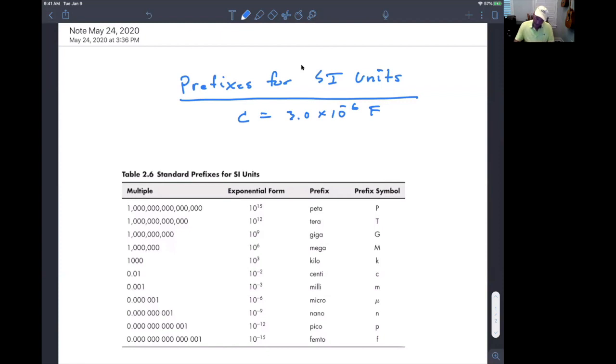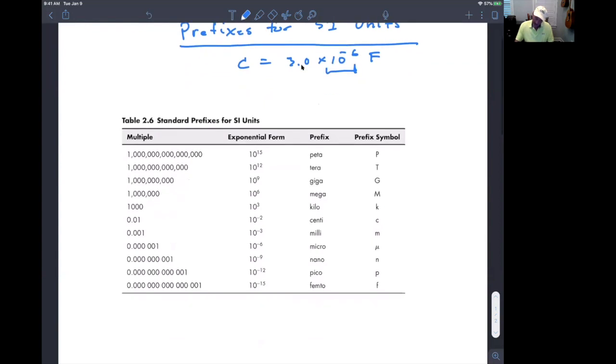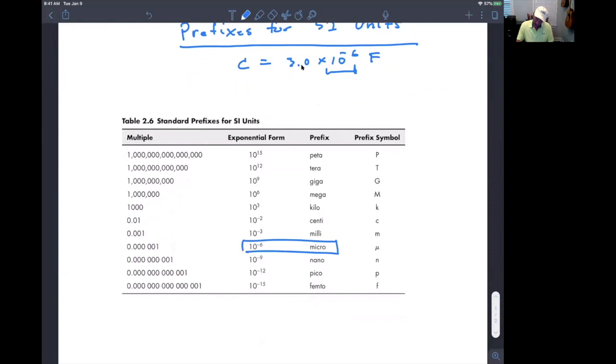But if I look at this prefix, 10 to the minus 6 is micro. So when I say micro and use this Greek letter mu, I could say that's the same thing as C is equal to 3 microfarads. So when you look on a capacitor, an electronic component, you can actually read and typically have something that looks like that on the label. So it's a shorthand way of taking care of something that looks like scientific notation.